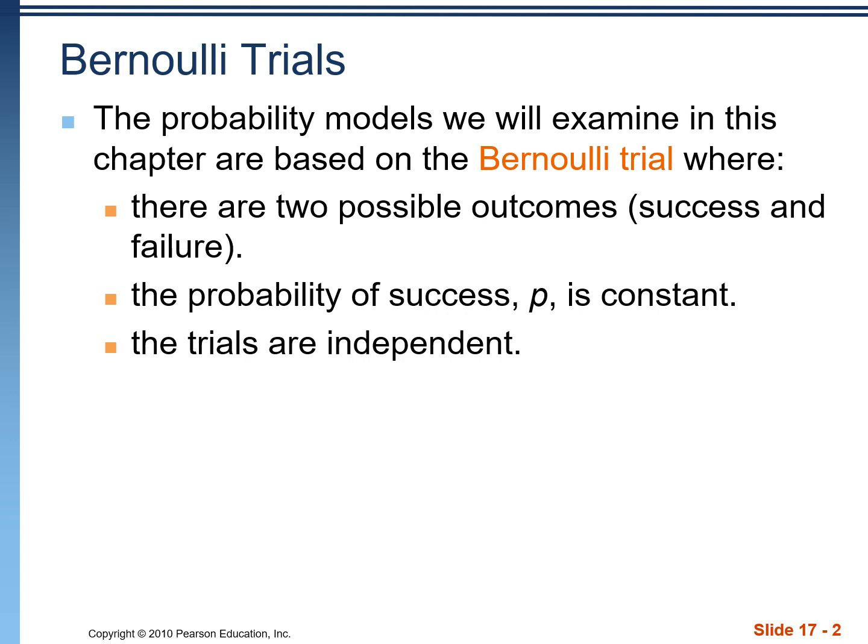The first criteria is that there's always two possible outcomes, which are typically identified as a success or failure. There's a probability of success, P, that remains constant throughout all our trials, and each trial is independent of all the other trials.